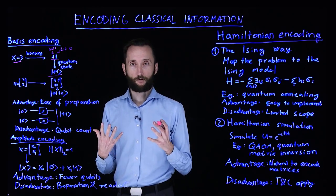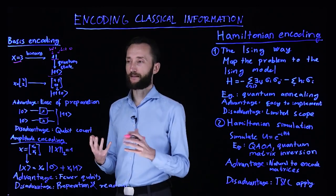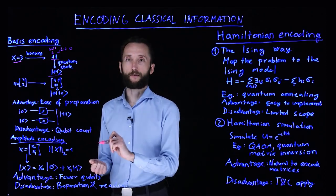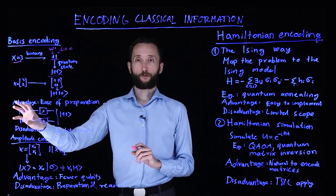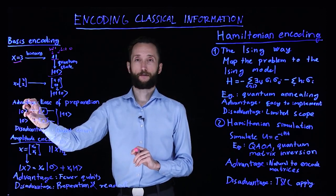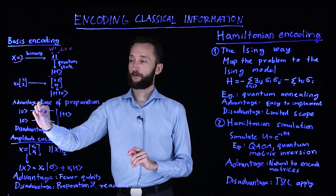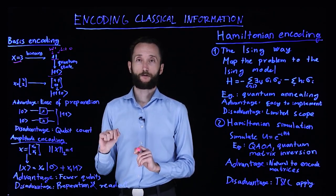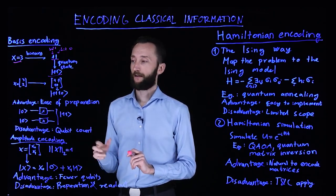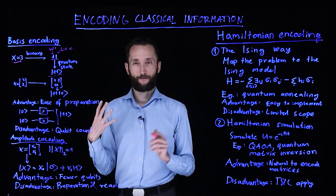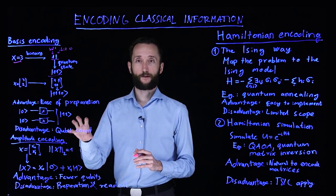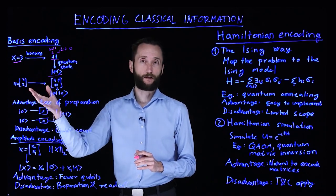So the greatest advantage of this encoding is that it's very easy to prepare, because you only have to flip certain qubits. Most quantum computers start from being initialized in the zero state, and then you just have to make these not operations, the x operations, to get to the state that you want to express. But the greatest disadvantage is that it's very wasteful of your qubits. You need lots and lots of qubits to describe, say, floating point numbers.